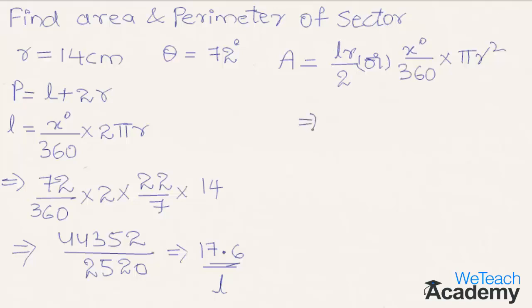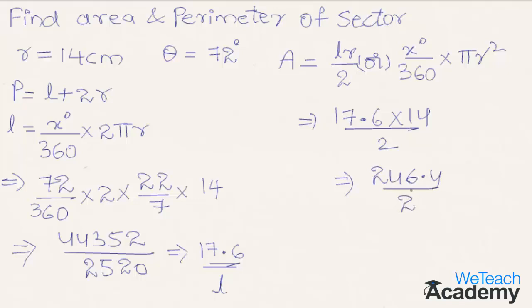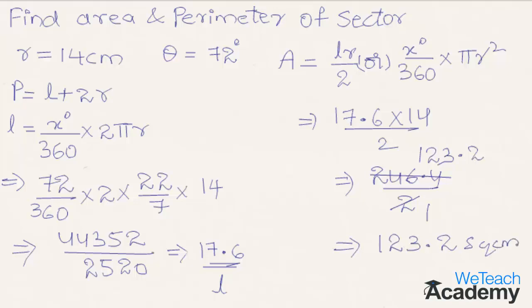By substituting both the values of l and r we get 17.6 into 14 divided by 2. By multiplying the terms in the numerator we get the product as 246.4 divided by 2. Simplifying, 2 times 123.2 is 246.4, so we get the result as 123.2 square centimeters as the area of the sector.